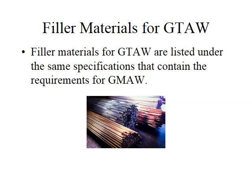Filler metals for GTAW are listed under the same specifications that contain the requirements for gas metal arc welding. While GTAW requires filler metal to be manually fed into the weld puddle and GMAW involves a mechanically fed process, the individual nature of each process precludes the use of rimmed steels with high oxygen content as a filler metal. The difficulty of introducing deoxidizers into the weld puddle requires that a previously deoxidized or killed steel be used as the filler metal for both processes.